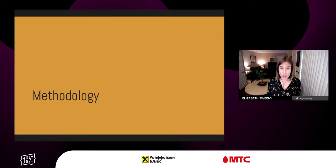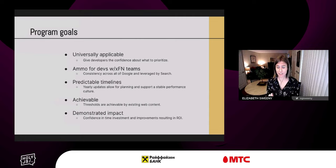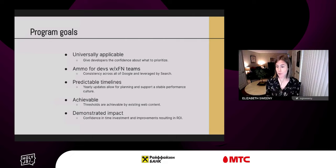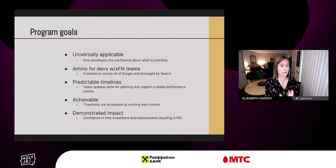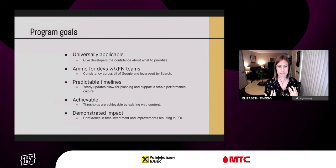Ultimately we're trying to balance giving you the latest research that will impact your bottom line, while not thrashing the ecosystem with changes at random intervals. As far as methodology, a few program goals: metrics are universally applicable. Another goal is to provide ammo for developers with cross-functional teams — because there's consistency now and it's used by Chrome, Search, etc., you can go to marketing or other business teams and say, here's how we're being evaluated. That consistency helps foster a performance-oriented culture.